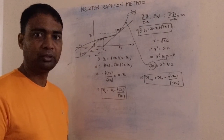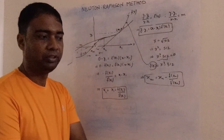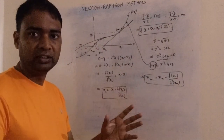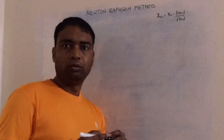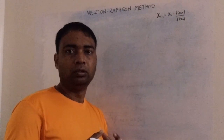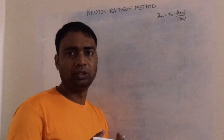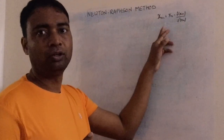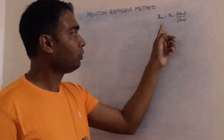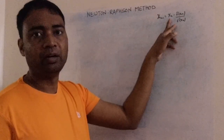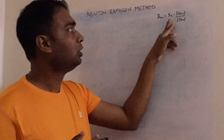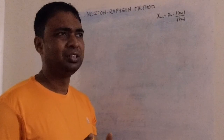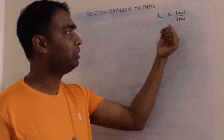Let me now demonstrate with a specific example so you understand what I mean. I'm going to calculate the square root of 612 using this method. I've already written the iterative relation. I'll start with an arbitrary value — I'll take x0 = 10. You can take any arbitrary starting value.